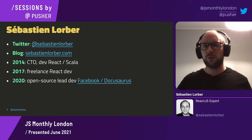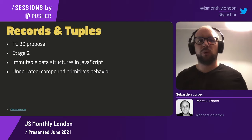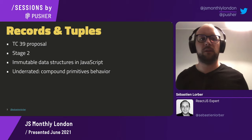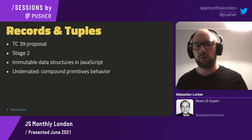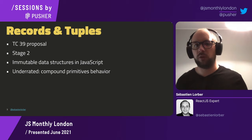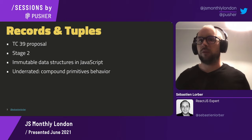Today I'm going to talk about records and tuples. It's a proposal to the ECMAScript language, which is essentially JavaScript. It is a proposal from the TC39 committee, which is responsible for making evolutions to the JavaScript language. It is currently in stage two, which means it's already quite advanced. People know about this proposal as introducing new immutable data structures native to JavaScript, but I think the most important part — the compound primitives behavior — is not widely known and has a lot more impact than just being immutable data structures.